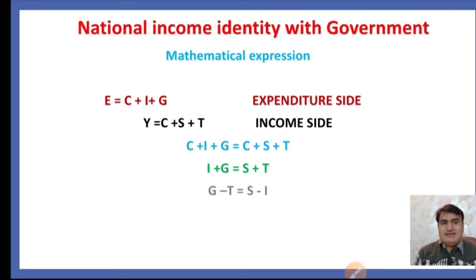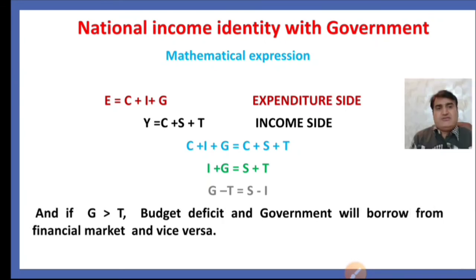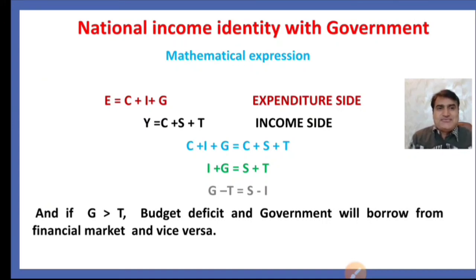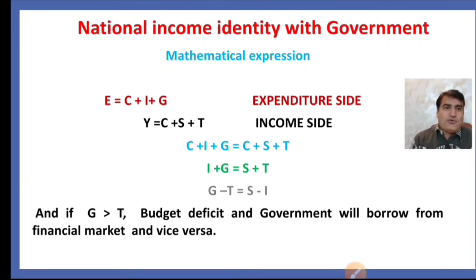Rearranging, government expenditure minus taxes equals saving minus investment (G − T = S − I). If government expenditure G is greater than taxes T, there will be a budget deficit and the government will borrow from the financial market. If government expenditure is less than taxes, there will be a budget surplus. In this way, the national income identity with government functions under the three-sector economy. If you have any questions, you may ask in the comment box. Thanks for watching.